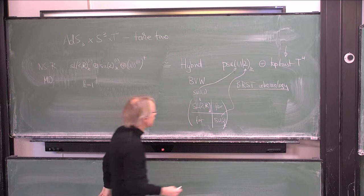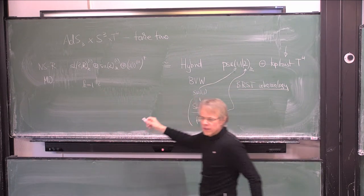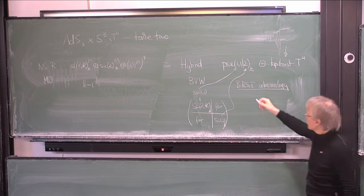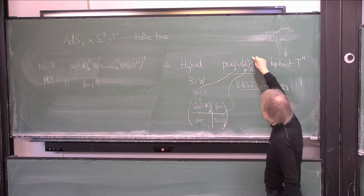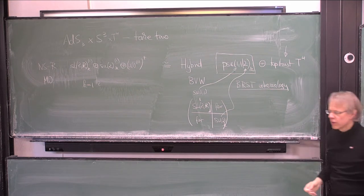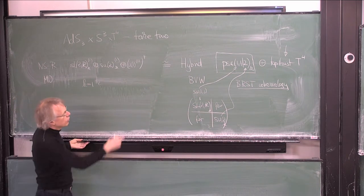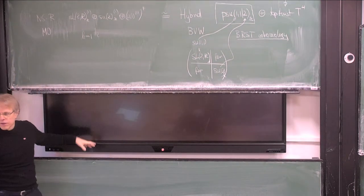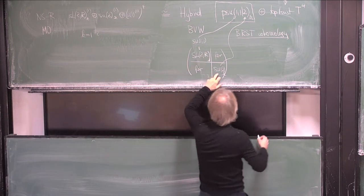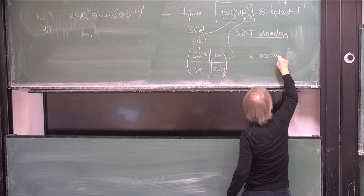The key point is that while the NSR theory at K equals 1 is a bit problematic, in the hybrid formalism there is no difficulty whatsoever with taking the theory at K equals 1. What we have to do is study the representation theory of this affine super Lie algebra. That is something we can do, and in fact you can easily see what happens at level 1 for PSU(1,1|2).